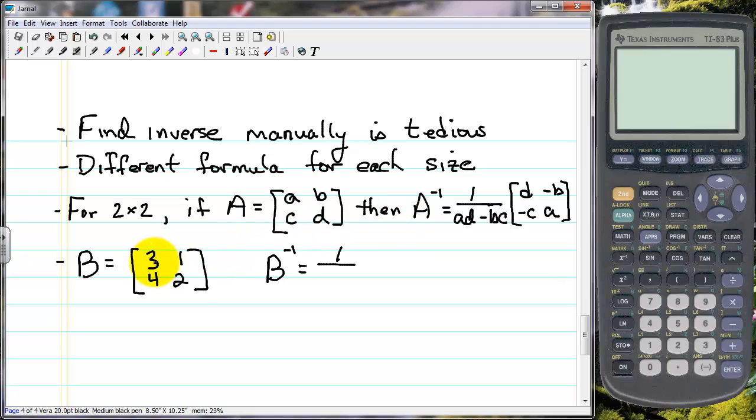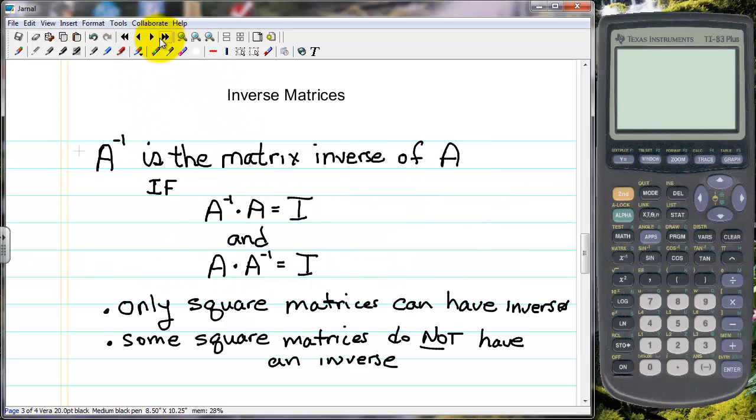So now we would have here one over, now I've got to do A times D which is six minus C times B which is four, so that's going to be one half. We're going to swap those two and take the negatives here and here. Now this is one half and I can do a scalar multiply so I can multiply the one half times everything inside the matrix. So one half times two is one, here I get negative one half, here I get negative two and here three halves. This would be our inverse matrix.